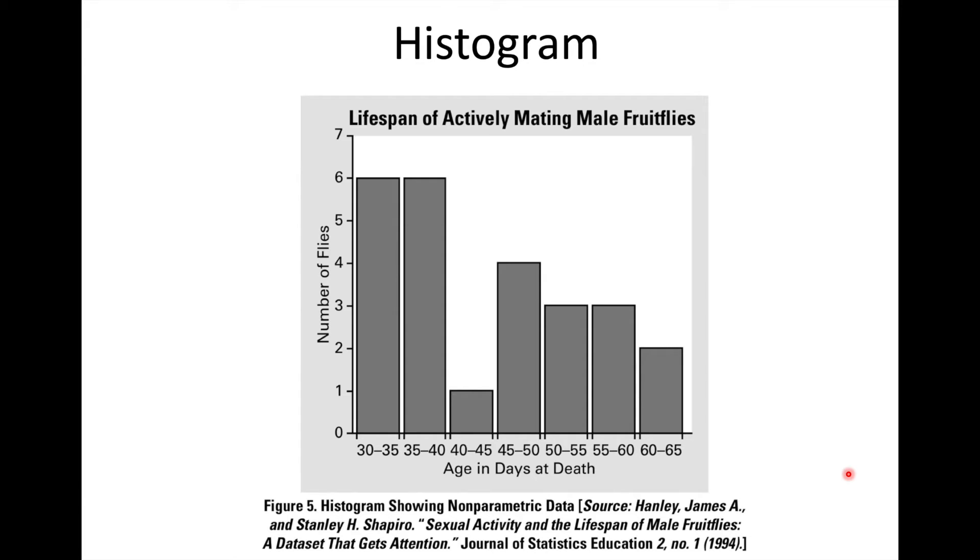A histogram is an approximate representation of the distribution of numerical or categorical data. We don't plot every single point, but instead we group the numbers into ranges. On the x-axis you can see we have these groups which are called bins. So 30 to 35 is one bin, 35 to 40 is another bin, and we're grouping the data together to create our representation for this population.